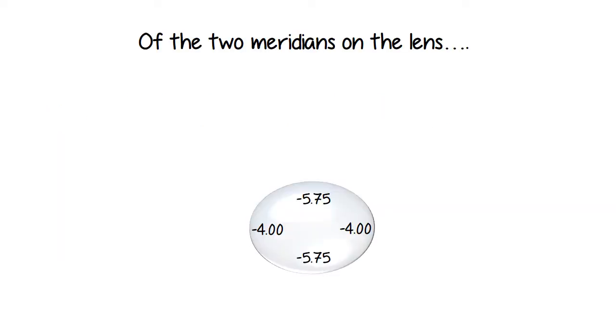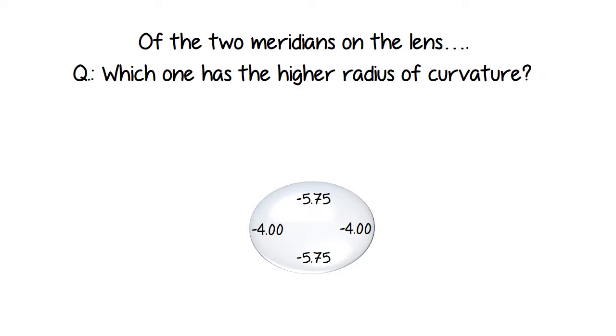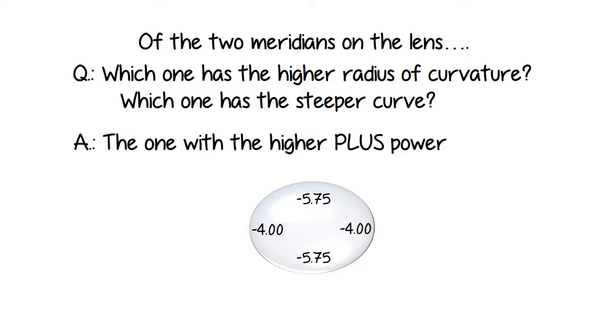Okay, looking back at our lens and the two meridians on our lens, which one has the higher radius of curvature? In other words, which one has the steeper curve? Answer, the one with the higher plus power.